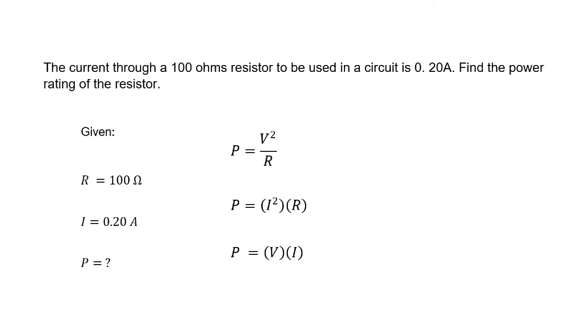Since our given has only current and resistance, then we will be using the second power formula I mentioned, which is power is equal to current squared times resistance.